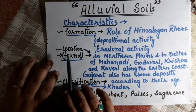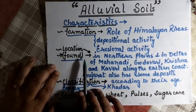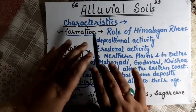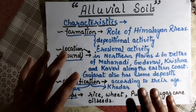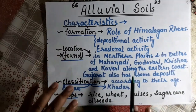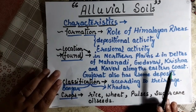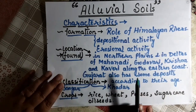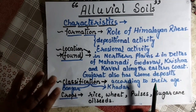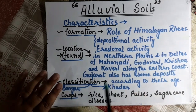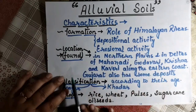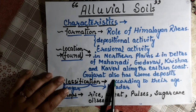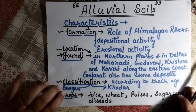Location: alluvial soil is found in the northern plains, and in the deltas of the Mahanadi, Godavari, Krishna, and Kaveri rivers along the eastern coast. Gujarat also has some deposits. Today's video contains three parts: first, explanation; second, map activity; and third, questions based on the map activity and explanation.